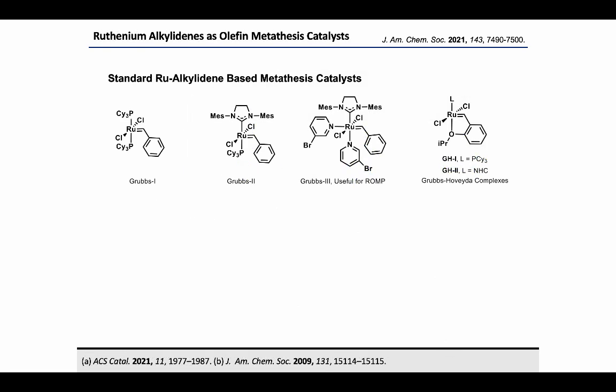Let us look at some of the standard ruthenium-alkylidene-based metathesis catalysts. This includes Grubbs' first and second generation catalysts, Grubbs' third generation catalyst used for ring-opening metathesis polymerization, and oxygen-chelated ruthenium-alkylidenes like the Grubbs-Hoveyda complexes.